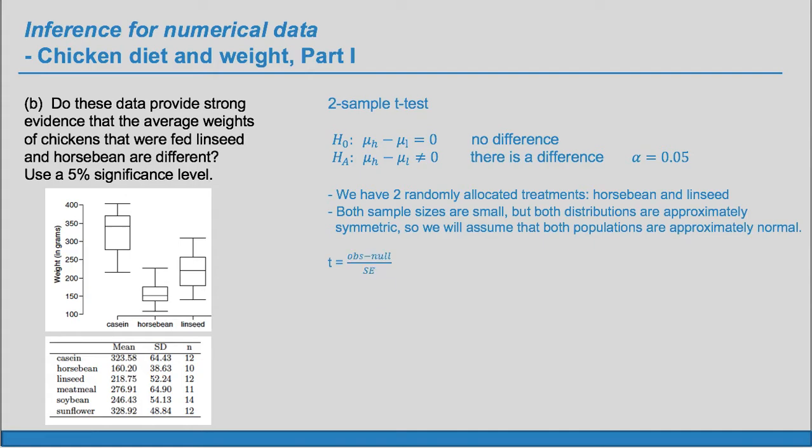Here we're talking about a difference. So we really have the observed difference minus the null difference. The observed difference is that difference in means given in the table, this average minus this average. That's the observed difference. The null difference is what's given by H sub O. The null difference is no difference, zero.